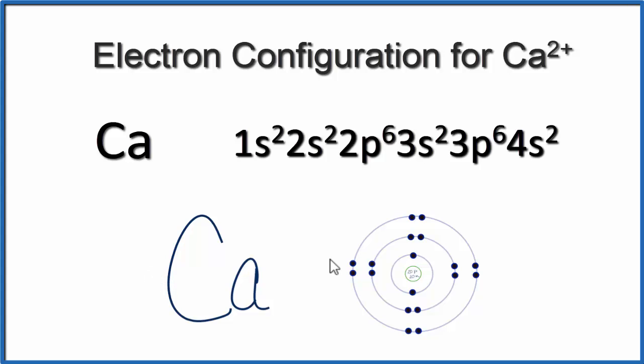Because we've lost those 2 electrons, and electrons are negative, we have a plus 2 charge. So let's write that here around the calcium, and then we'll need to get rid of the 4s2 in our electron configuration. Once we get rid of that 4s2, we now have Ca2+.